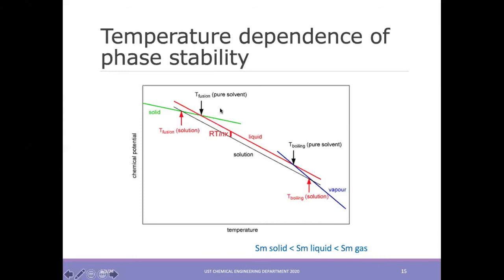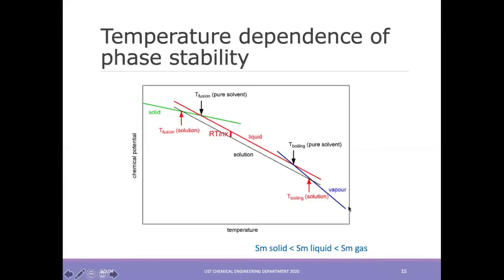Below the melting point T_f, the solid phase has the lowest chemical potential and is the most stable. At the melting temperature T_fusion, mu_solid = mu_liquid — they are in equilibrium — but both are less than mu_gas. Above melting but below boiling, the liquid phase is most stable. At the boiling temperature T_B, mu_liquid = mu_gas, and both are less than mu_solid. Note that these conditions are at constant pressure of one atmosphere. Molar entropy of gas is much higher than that of liquid, which is higher than that of solid.